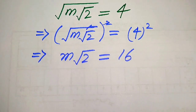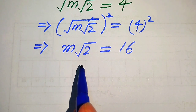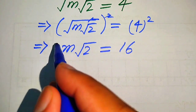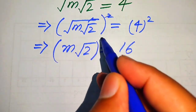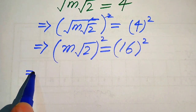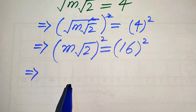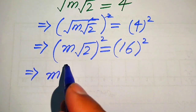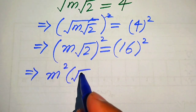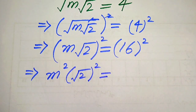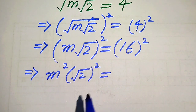Now we still have a square root term, so we again apply squaring on both sides. When we square again it will be written in this form. On the left hand side we apply the square identity, separating the square on both values, and it will be written in this form.